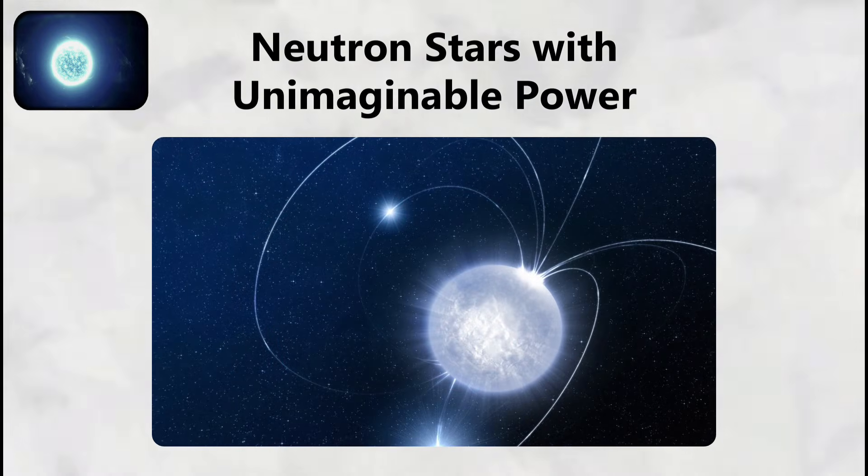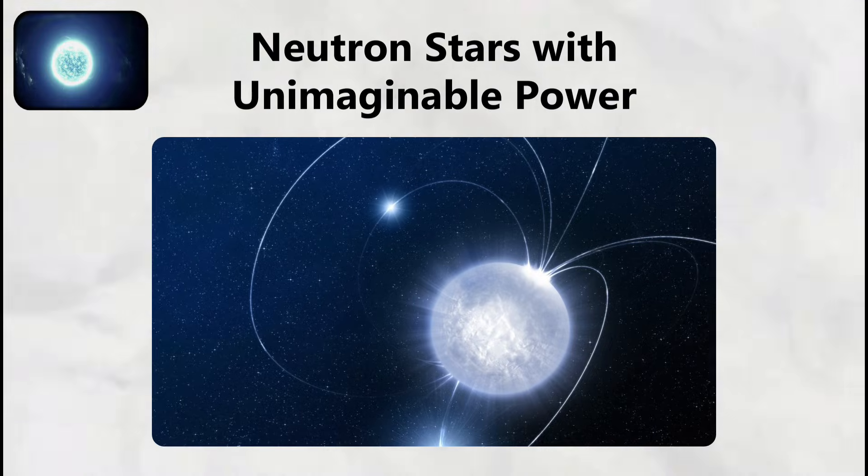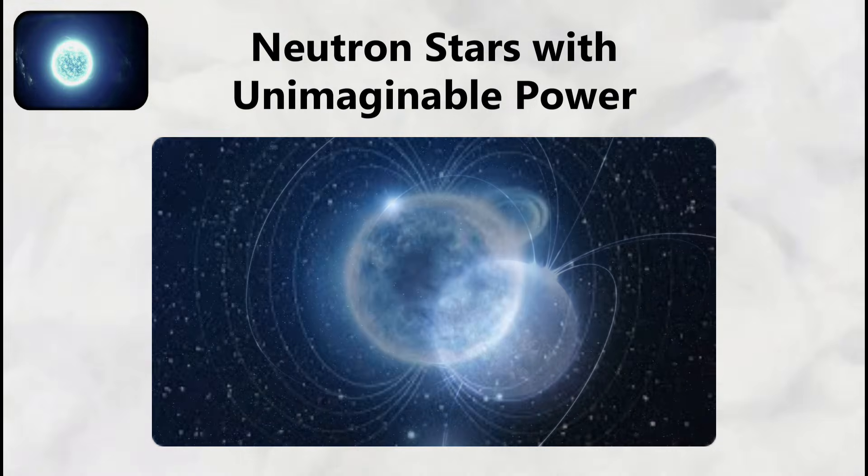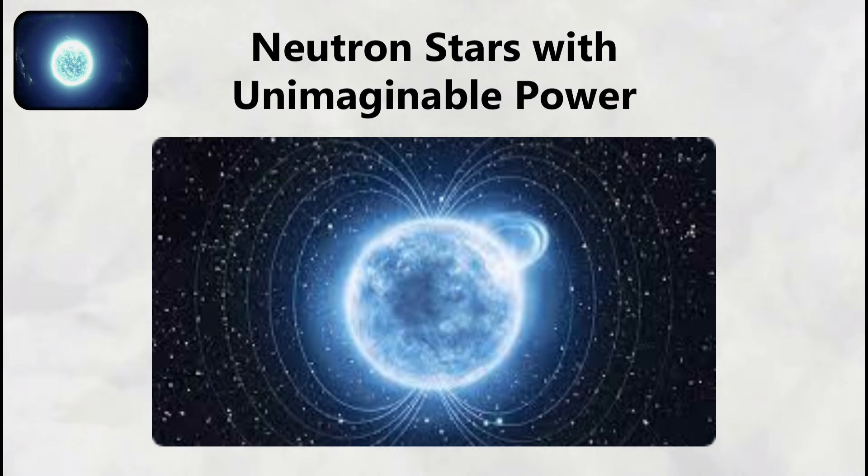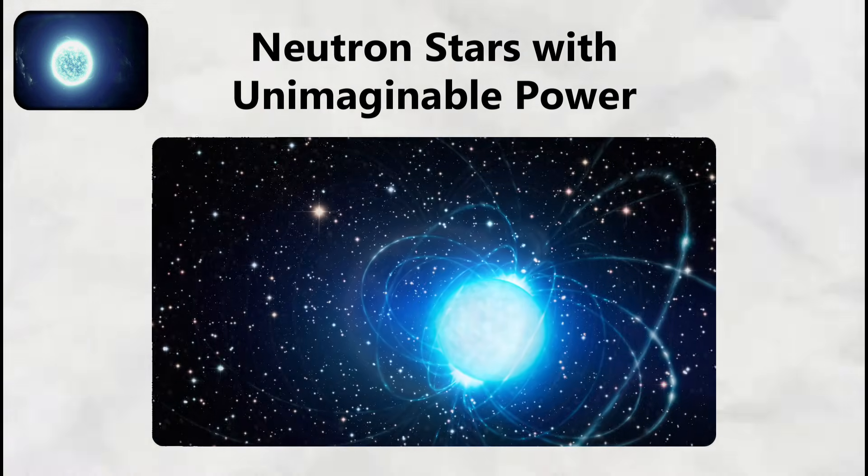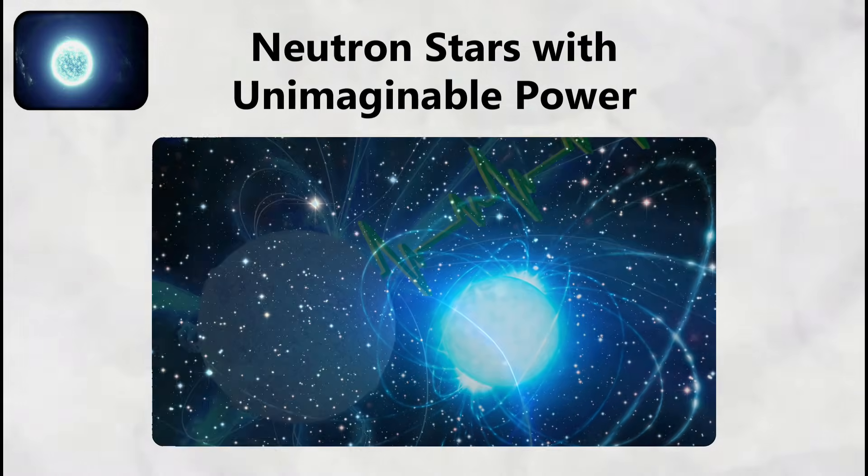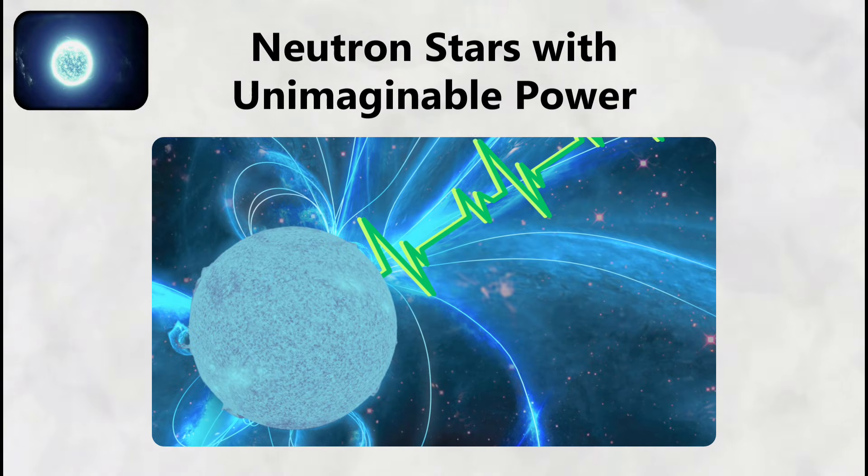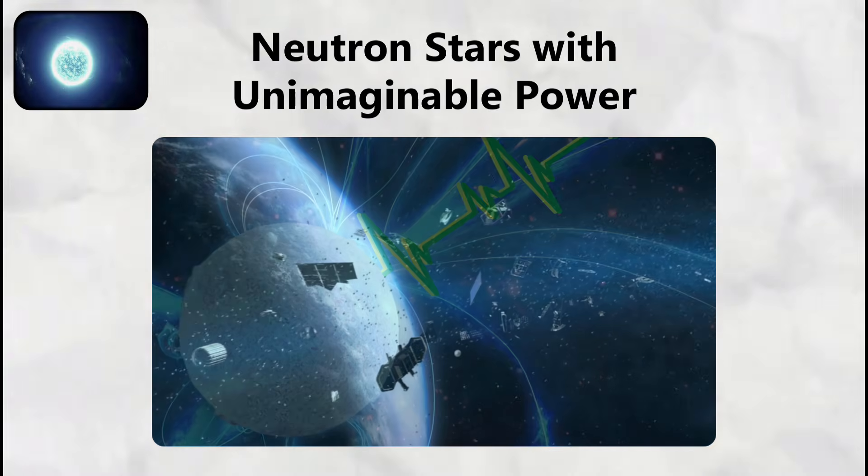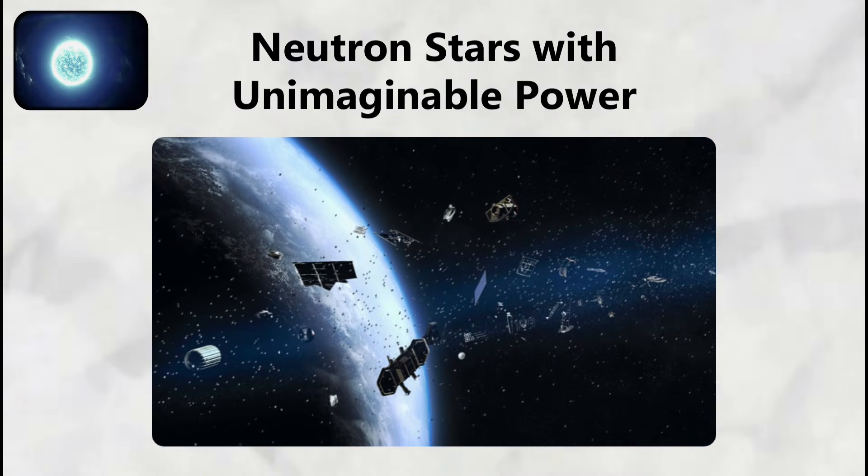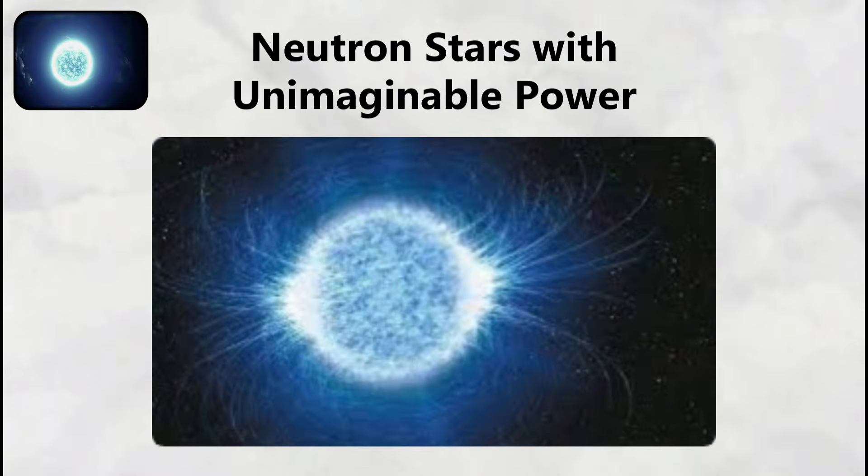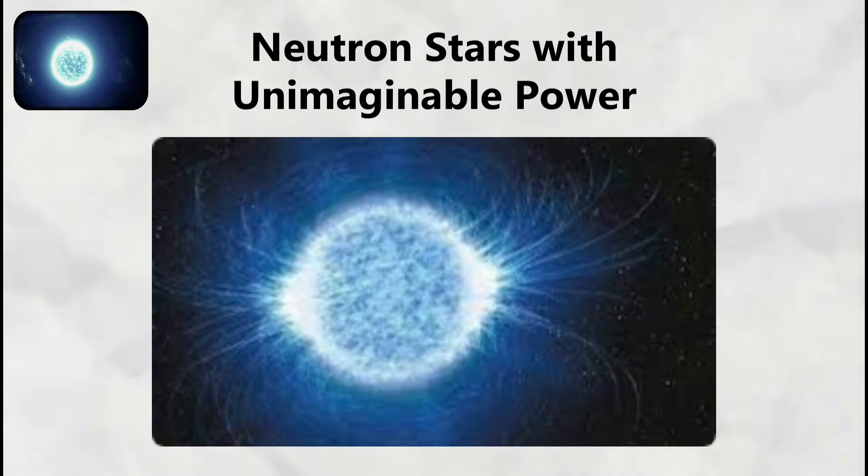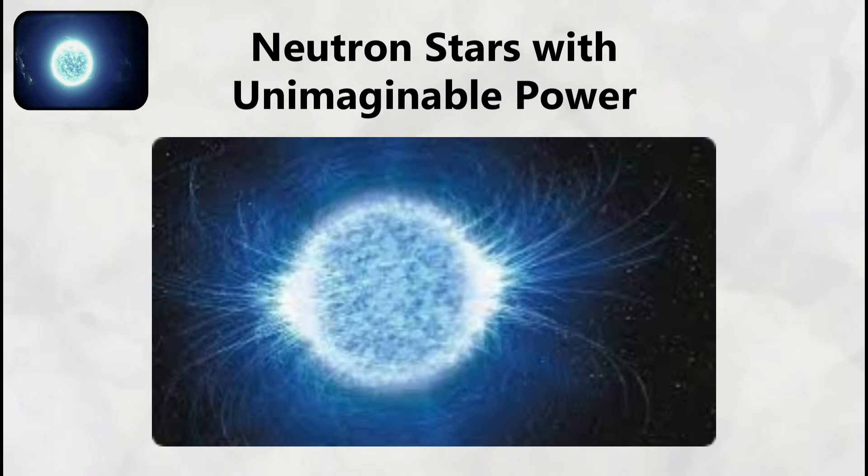These magnetic monsters experience starquakes when their crusts crack under magnetic stress, releasing more energy in one-tenth of a second than our sun produces in 100,000 years. The magnetar SGR 1806-20, located approximately 50,000 light years from Earth, produced a gamma ray flare in December 2004 that temporarily blinded satellites, disrupted radio communications, and compressed Earth's magnetosphere despite the enormous distance.